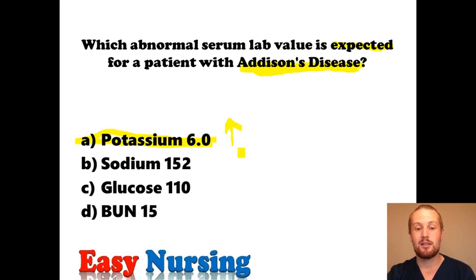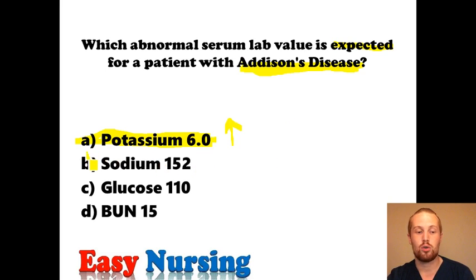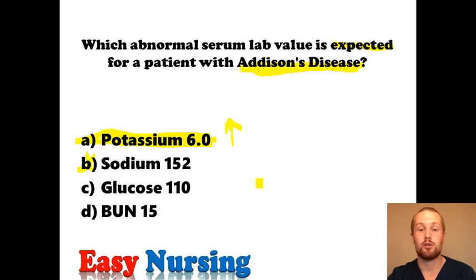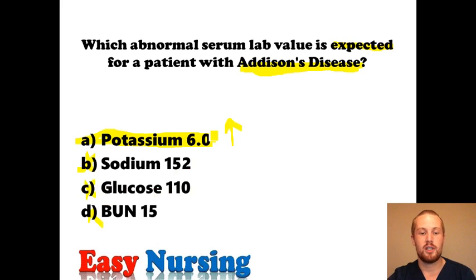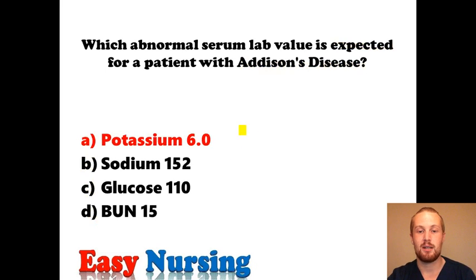Quick tip: when you have a high potassium, you really want to watch your heart because you're at a high risk for dysrhythmias. You're not holding on to salt — you're losing your salt and your fluid — so you'll expect a low sodium, less than 135. You don't have cortisol, the stress hormone, to tell your body to release glucose into your bloodstream, so you're going to have a low glucose, less than 70 or so. The correct answer should be A. Quick recap: you're going to have a high potassium with Addison's.